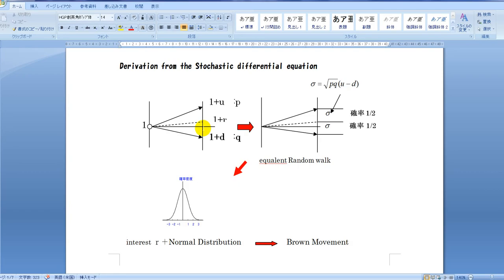Suppose a change of unit value in unit time is two-way: upwards change with probability P, downward change with probability Q. The average of the change must be equal to risk-free asset interest R. The variance of this binomial distribution is calculated and the standard deviation is represented. We regard the binomial movement as a random walk with average 1 plus R and sigma.